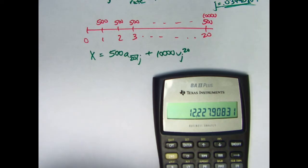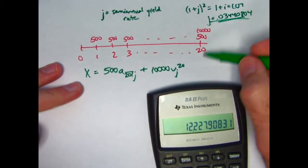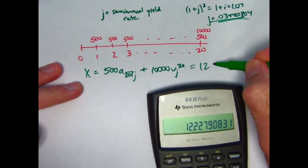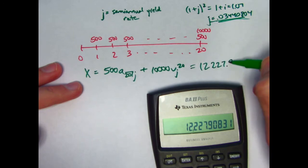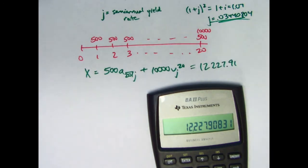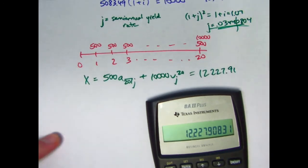And if you use as many decimals as I have here for J, you get X to be $12,227.91.